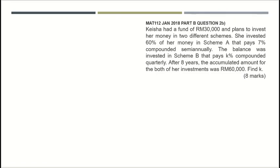For Part B, it is an application of compound interest with higher marks and a more complex solution. The question states that Kisha had a fund of 30,000 and planned to invest her money in two different schemes. She invested 60 percent in Scheme A at seven percent compounded semi-annually, and the balance in Scheme B at k percent compounded quarterly. After eight years the accumulated total was 60,000. We need to find the value of k.